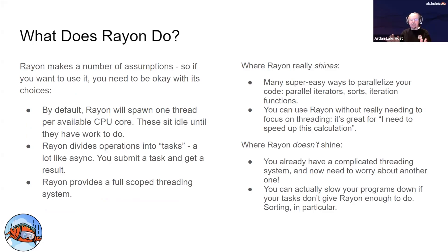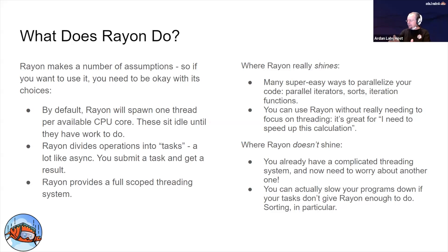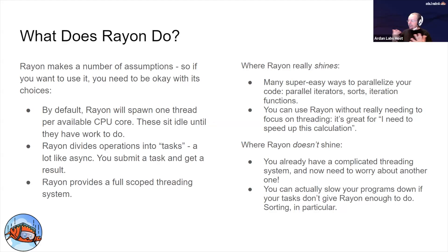Rayon is easy mode. By default, Rayon will spawn one thread per available CPU core the first time you call it; these sit idle until there's work to do. Rayon doesn't think of things to do as threads — it thinks of them as tasks. In this respect it's sort of a halfway house between async and threads. If you're doing a computational program but async is the logical way to think about it, Rayon is a good bridge. I personally recommend async for really high-performance I/O, and threads when computation speed is your primary issue. You can always mix the two together.